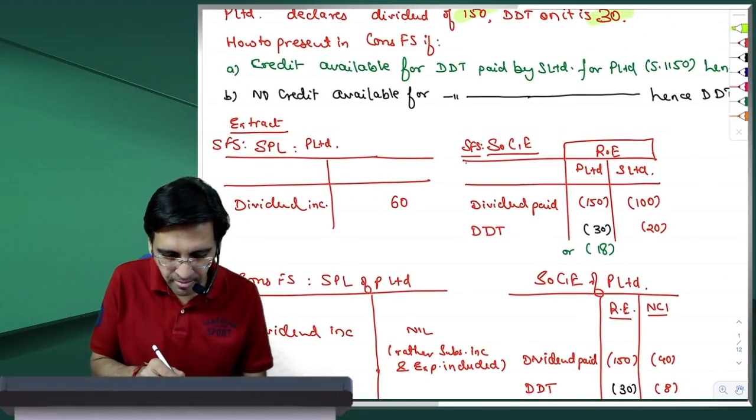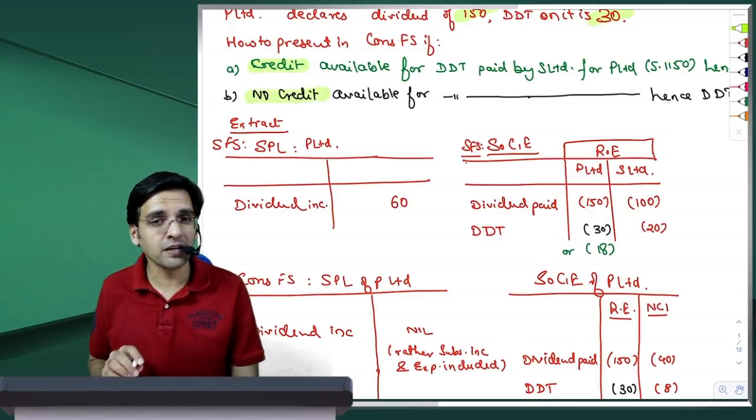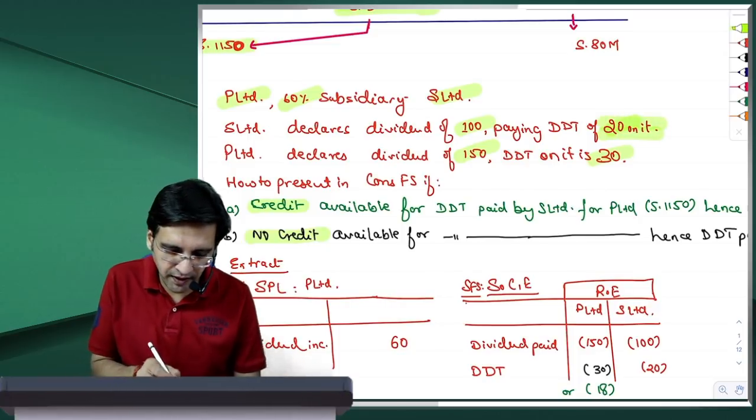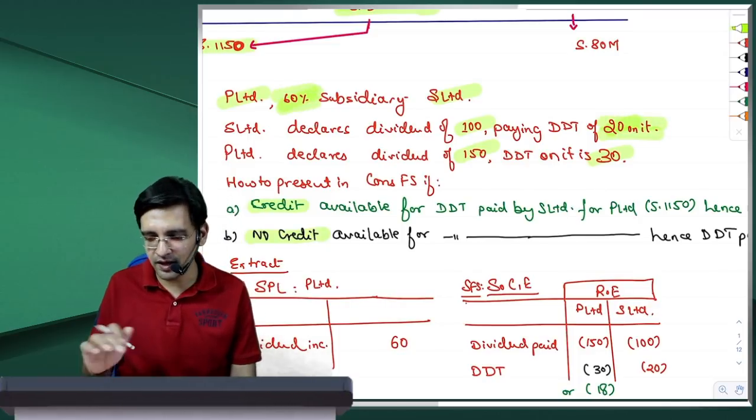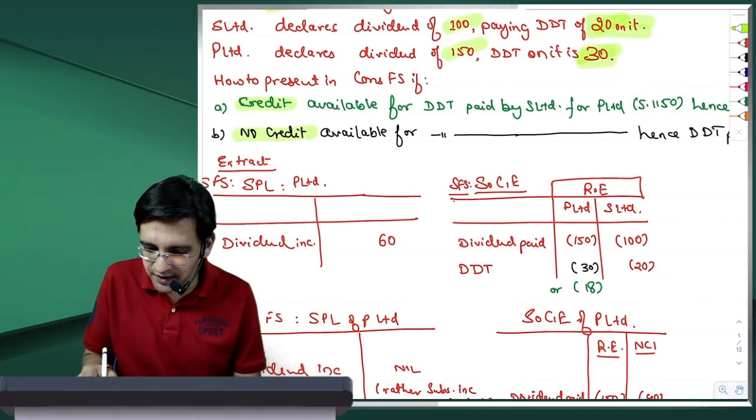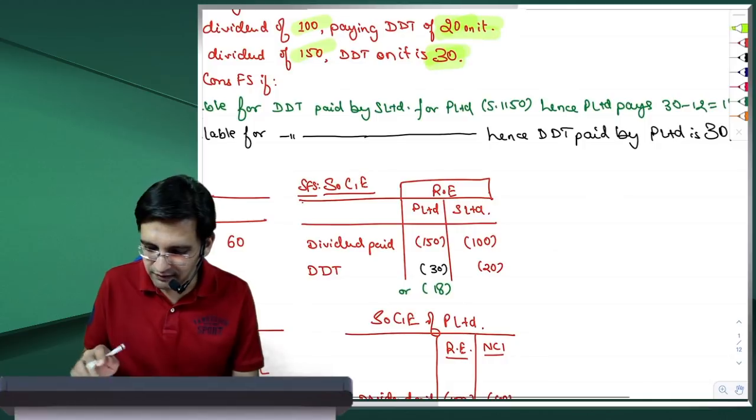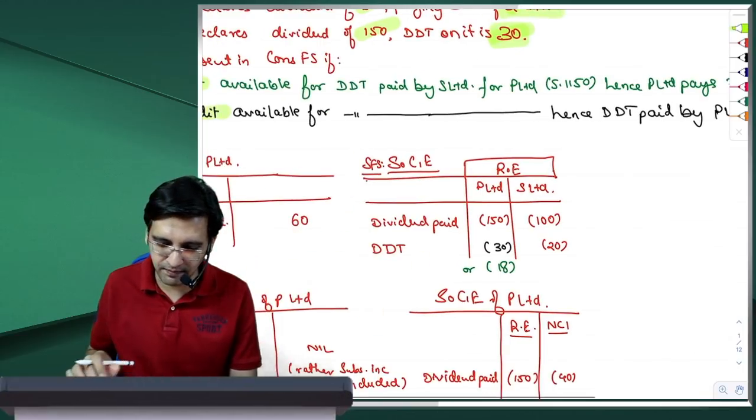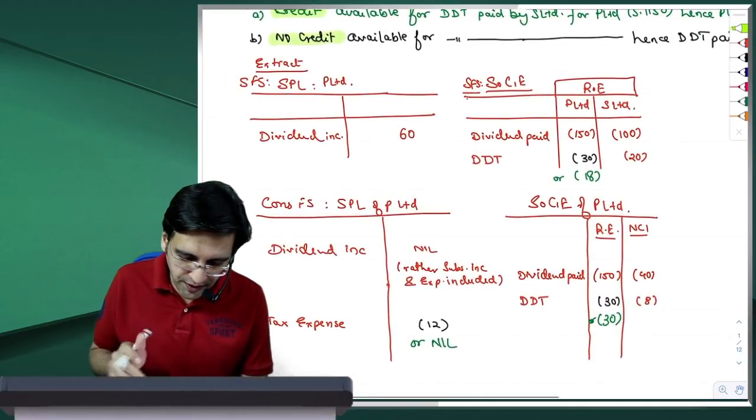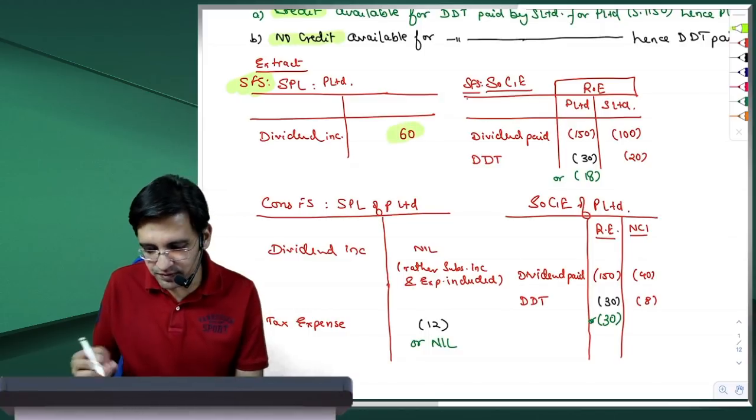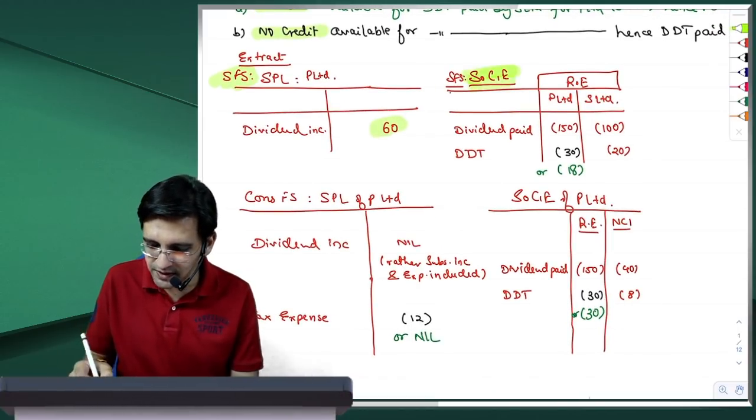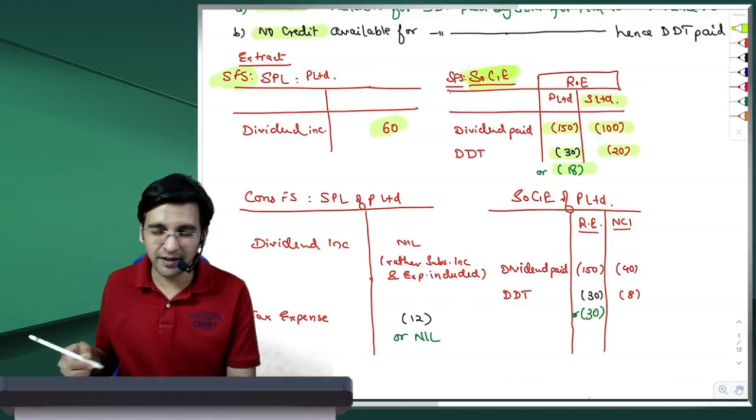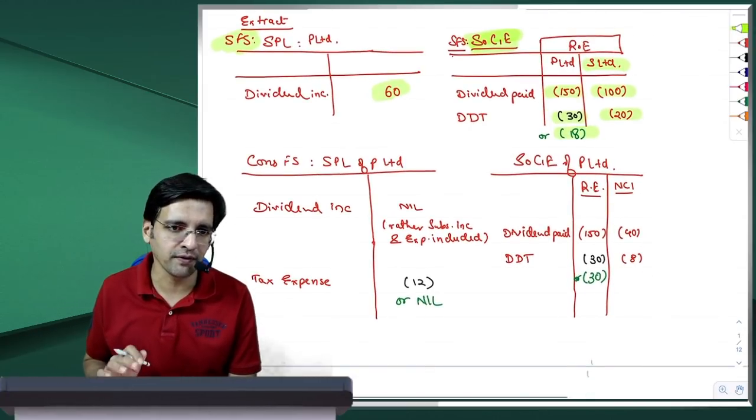Just to save time, I've created something here. 31 March 2020 tak section 115O ke azaadha DDT pay karna hai. Subsidiary ne holding ko dividend diya hai, uske upar jo tax pay hoa hai, holding agar dividend de rahi hai, jo tax pay bol hoga, uska credit le sakti hai cascading effect bachane ke liye. Is logic se parent, subsidiary, 60% holding, subsidiary ne 100 rupay ka dividend, uspe 20 ka DDT pay kiya, parent ne 150 ka dividend aur uspe 30 rupay ka DDT pay kiya.